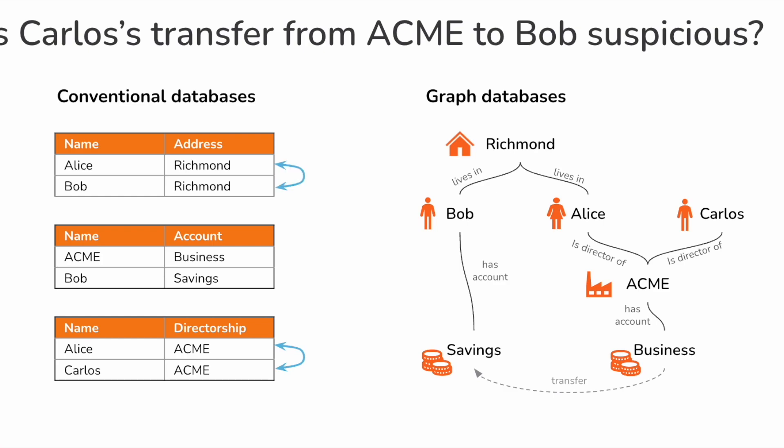Similarly, to link Alice to Bob, you need to join the addresses table to itself on the field address. And to link Carlos to Bob, you'd have to join the result of the two queries above together on the name field. Then you'd have to join the accounts into that mega table and filter out only records with the source and destination accounts you're looking for.